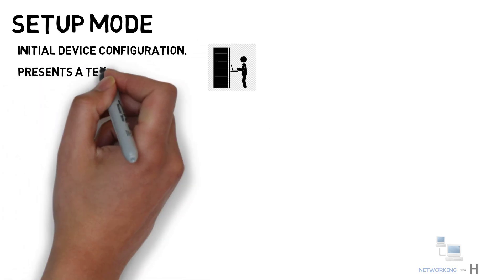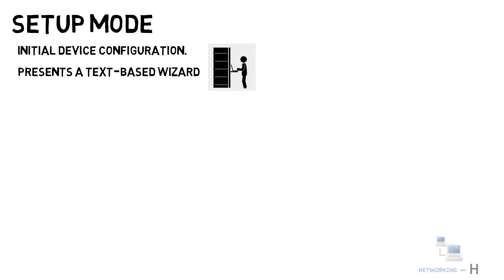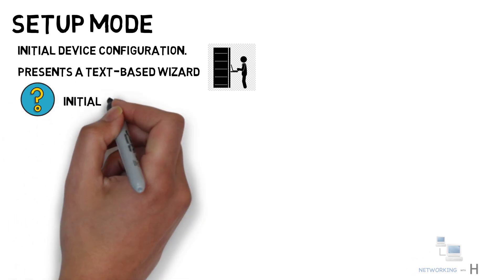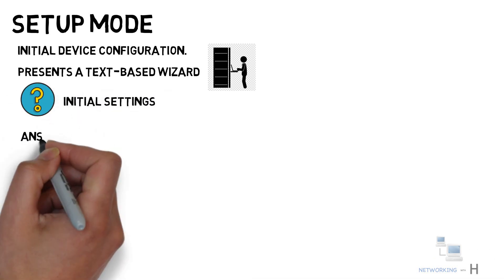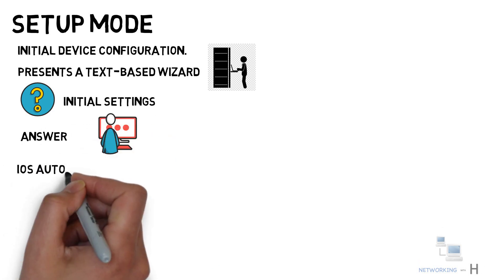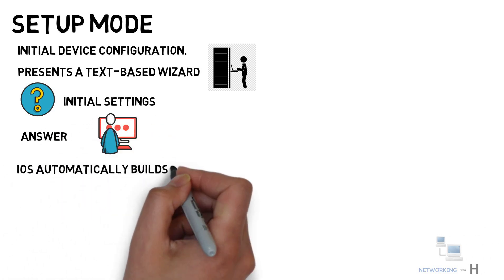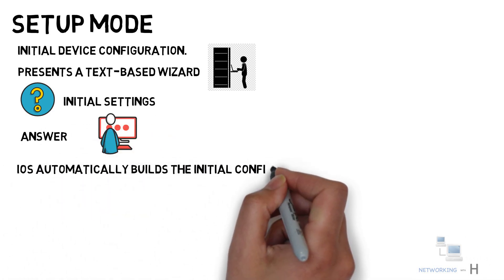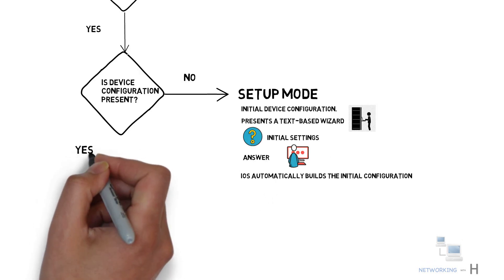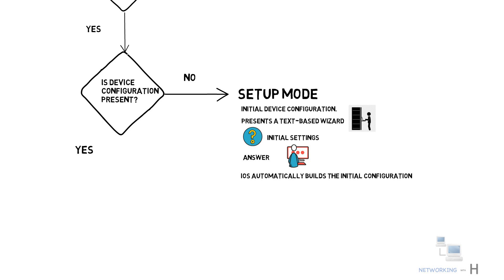This mode presents a text-based wizard that asks questions about initial settings in sequence. Based on the answers provided by the user, the IOS automatically builds the initial configuration. Once the initial configuration is done, or if the configuration is already present in the router, a user will end up directly into the next mode — the user mode.